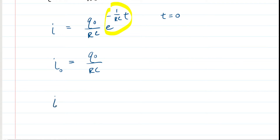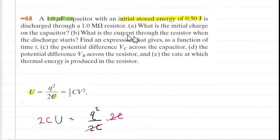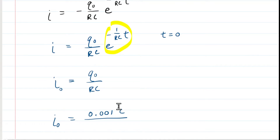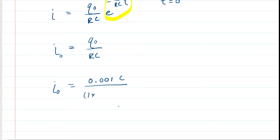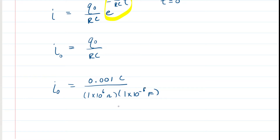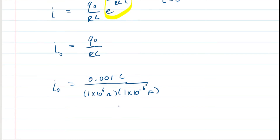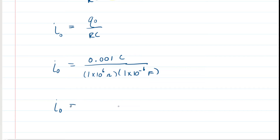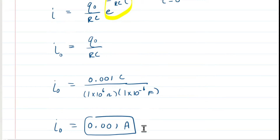We already calculated the initial charge: 0.001 coulombs. We divide by the resistance — given as 1 megaohm, so 1 times 10 to the 6 ohms — and the capacitance of 1 microfarad, which is 1 times 10 to the minus 6 farads. Converting to standard units, the initial current is 0.001 amps. This is the correct answer for Part B.